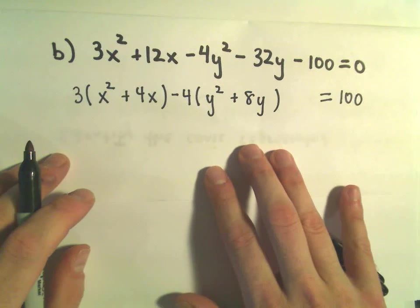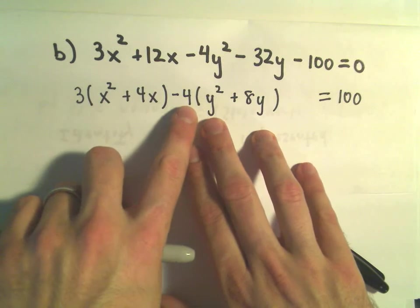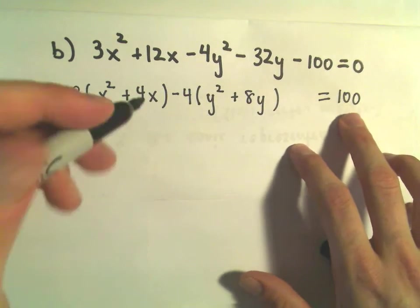Okay, so I think we've got everything okay here. We would have 3x squared plus 12x. We would have negative 4y squared minus 32y. Our negative 100 is on the right side.